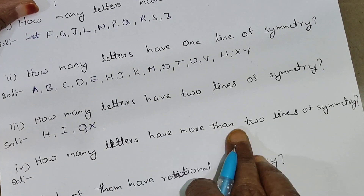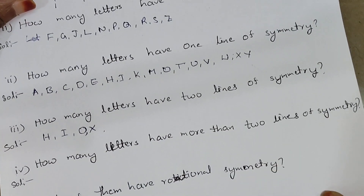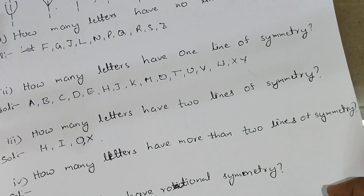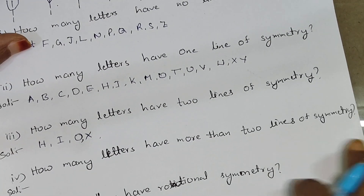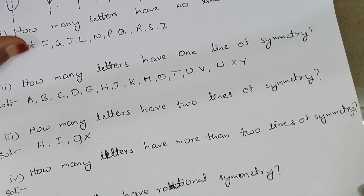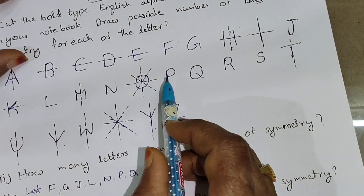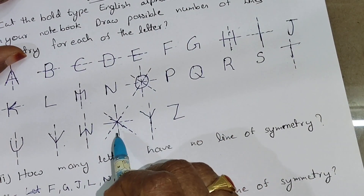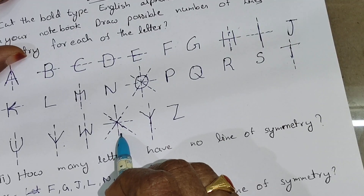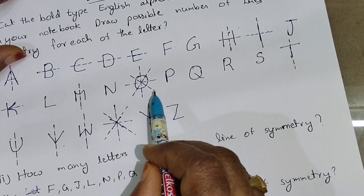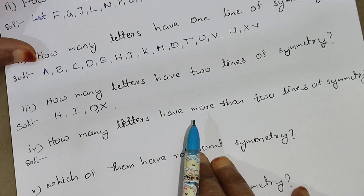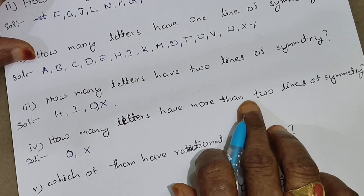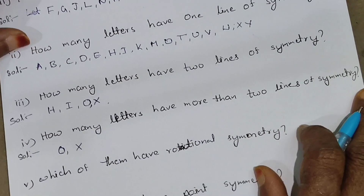Next: how many letters have more than two line symmetry? O has four symmetric lines and X also has four symmetric lines. So these two letters, O and X, have more than two symmetric lines.